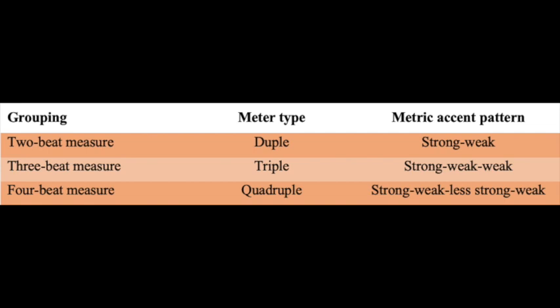If you have a grouping of 2 beats, that would be duple meter — as in like double — and you would go strong, weak: 1, 2, 1, 2, strong, weak. Marches are like that: left, right, left, right — not left, right, left, but left, right, left, right.